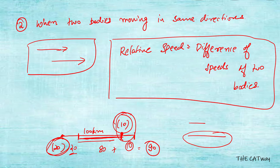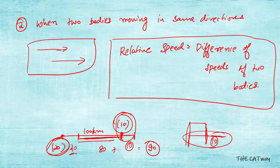That is why we take the difference between the speeds of the two bodies as the relative speed. The equal distance both bodies cover cancels out and doesn't affect anything. The extra distance the second body is traveling is what matters. So with a relative speed of 10 kilometers per hour, the second body will cover the 100-kilometer gap and reduce it to zero.